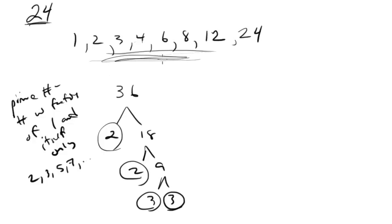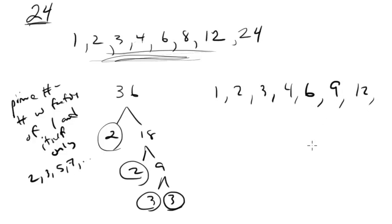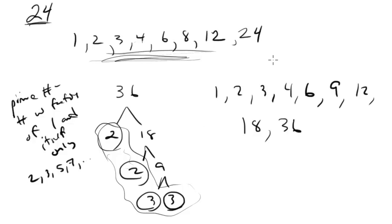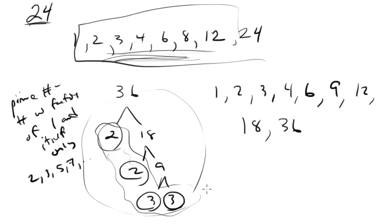Those are the prime factors. By the way, if we do the regular factors of 36, it would be 1, 2, 3, 4, 6, 9, 12, 18, and 36. So there are two different kinds of factors: you've got your regular factors and then you've got your prime factors — two different approaches to getting pretty much the same thing.